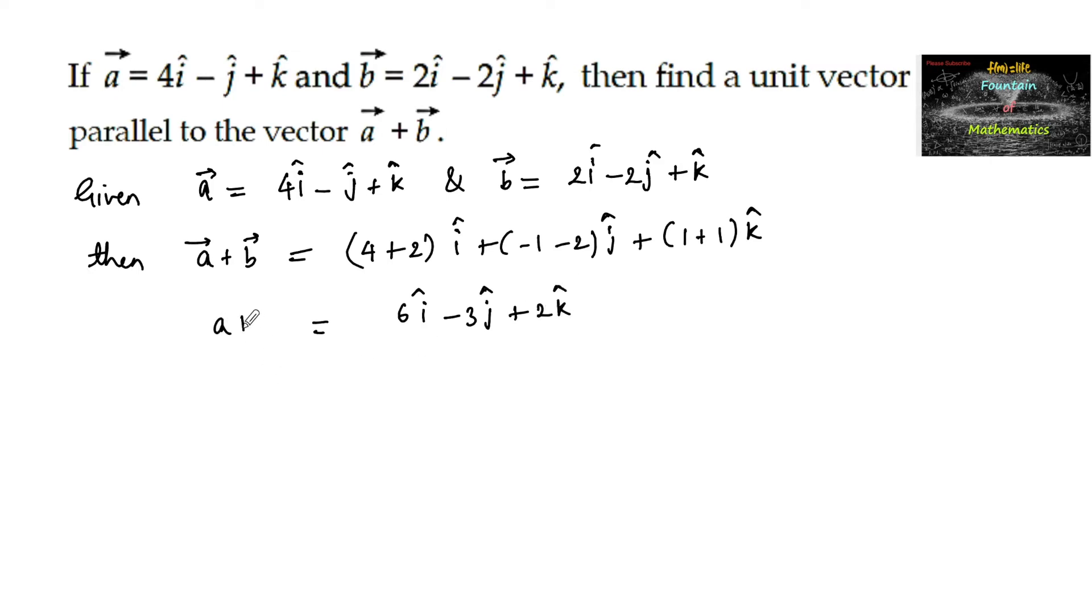This is vector a plus b, and the magnitude of the vector a plus b is mod of a plus b, which is equal to root of 6 square plus minus 3 whole square plus 2 square, which is equal to 36 plus 9 plus 4, that is root 49, which is positive square root 7.